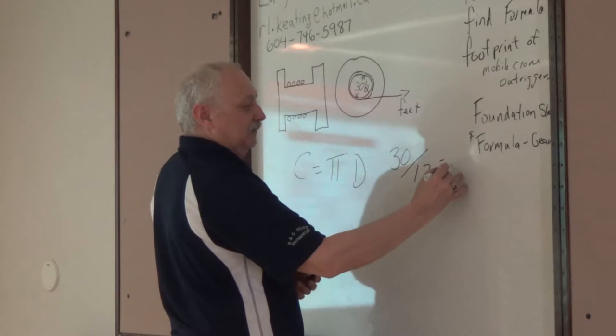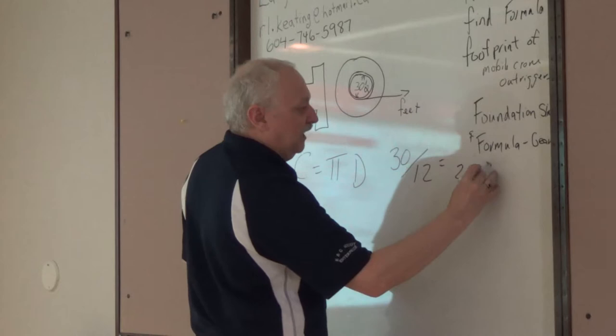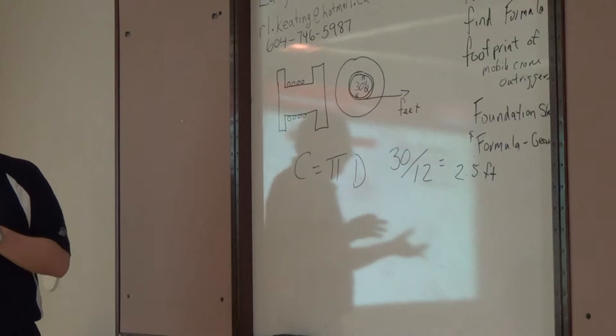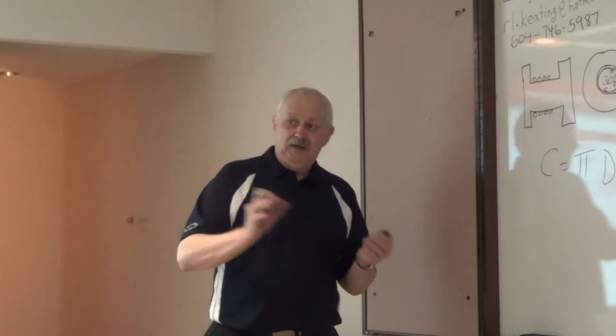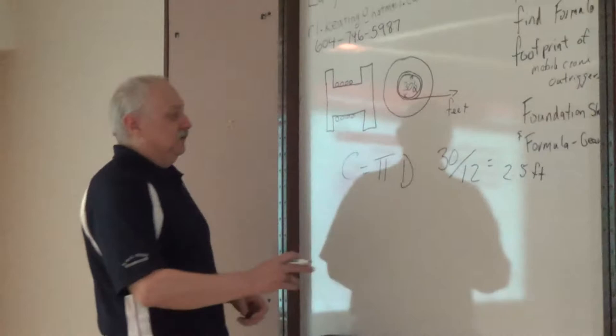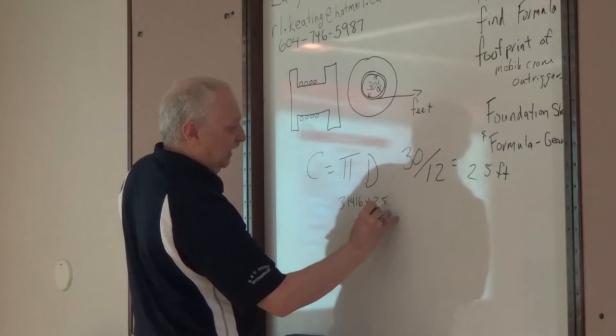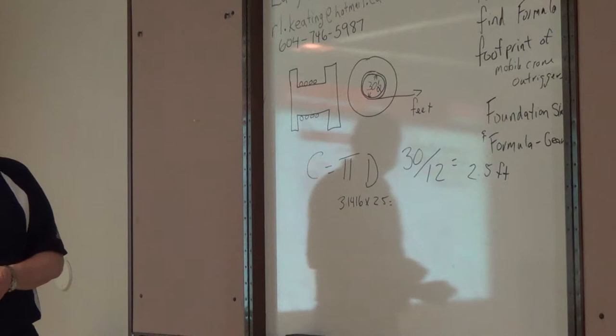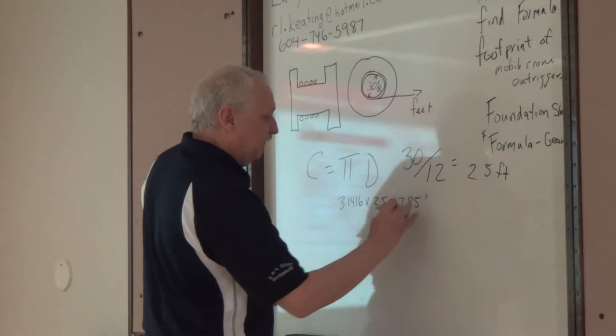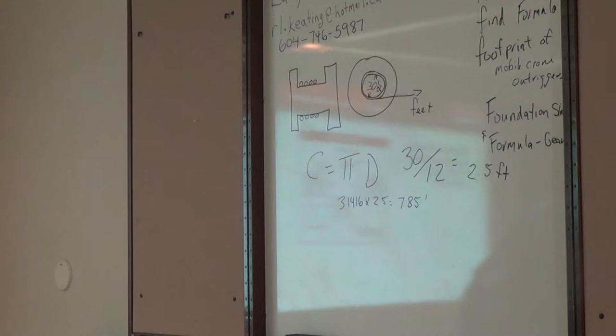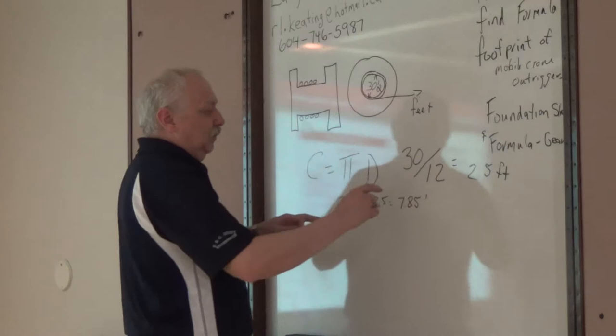That's 2.5 feet. This just saves us some calculations and trying to figure out going back. The less calculations you do, the less opportunity there's going to be for error. We've got this, we know our diameter, so now we want to find the circumference. That's 3.1416 times 2.5, and that equals 7.85 feet.